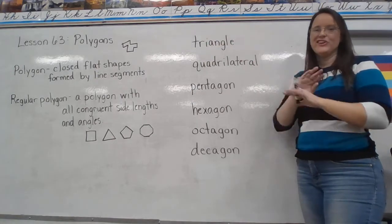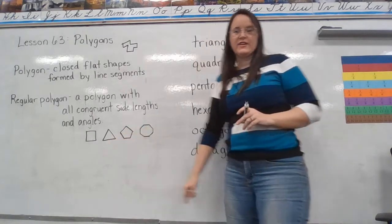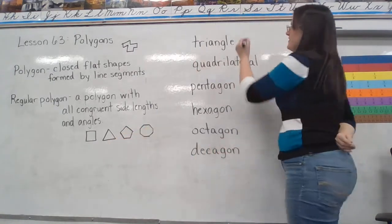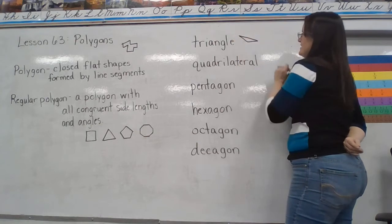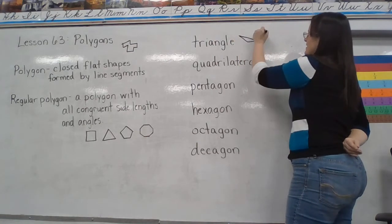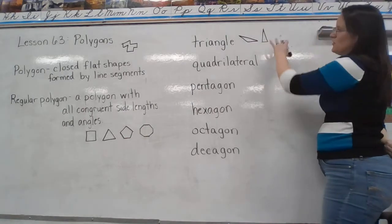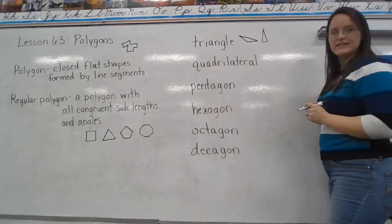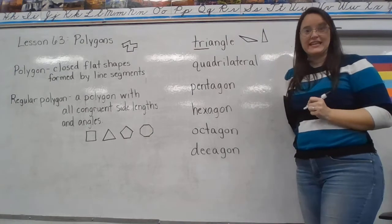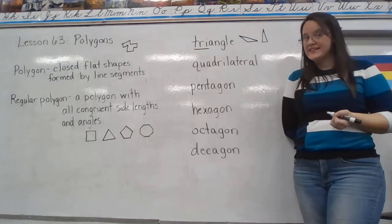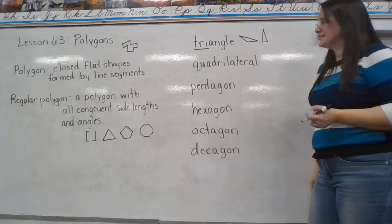Triangle — you guys have that covered. This is a regular triangle, but we have different types of triangles. Tri means three, like tricycle — three wheels. So triangle has three sides.